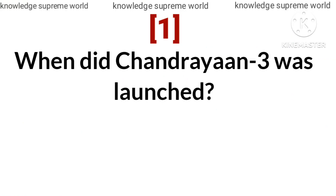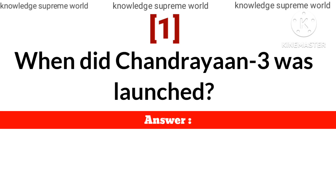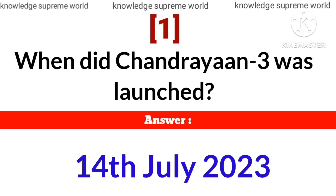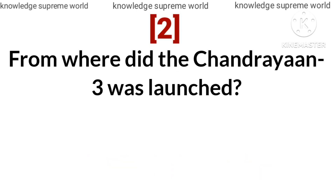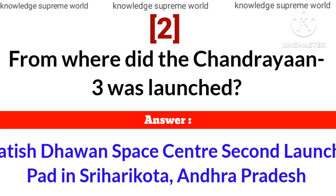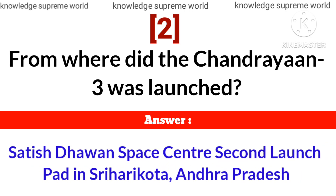When was Chandrayaan 3 launched? Answer: 14th July 2023. From where was Chandrayaan 3 launched? Answer: Satish Dhawan Space Center, Second Launch Pad, in Sriharikota, Andhra Pradesh.